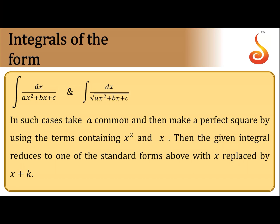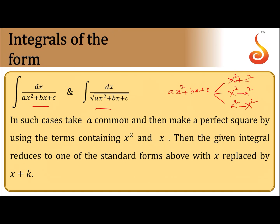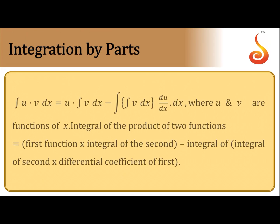For algebraic functions of the form ∫1/(ax²+bx+c) dx or ∫1/(√(ax²+bx+c)) dx, whenever such functions are given you try to convert the expression into one of three model forms: x²+a² model, x²−a² model, or a²−x² model. Once converted, you apply the corresponding formula to get the required answer.